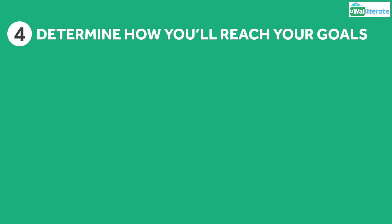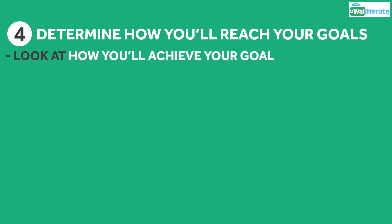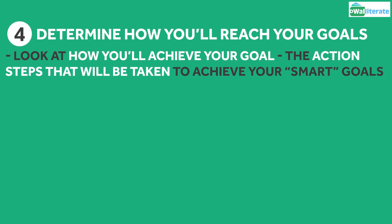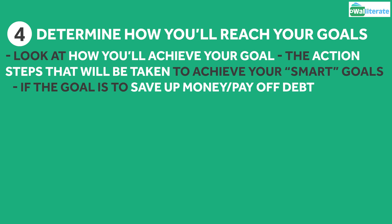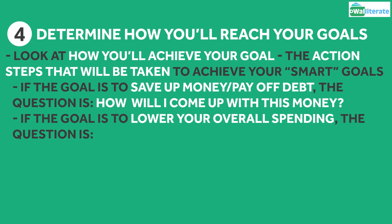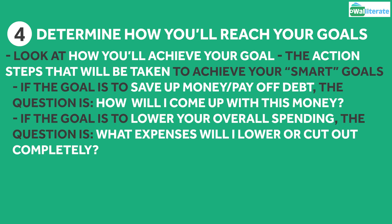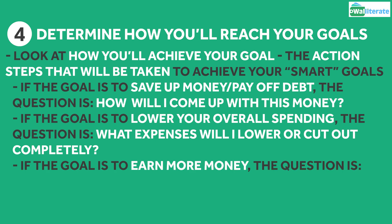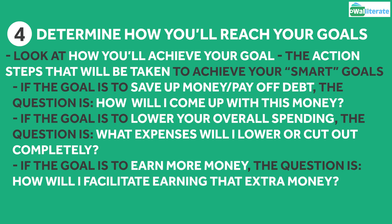Step 4: Determine how you'll reach your goals. We've gone over what we want to do, now we need to look at how we're going to do it. These are the action steps we'll take to achieve our goals. For saving up money or paying off debt, the question is: how am I going to come up with this money? For lowering overall spending, the question is: what expenses am I going to reduce or cut completely? If your goal is to earn more money, the question is: how am I going to facilitate earning that extra money?